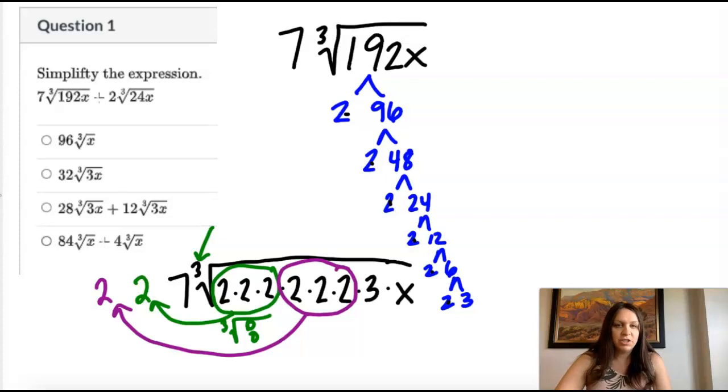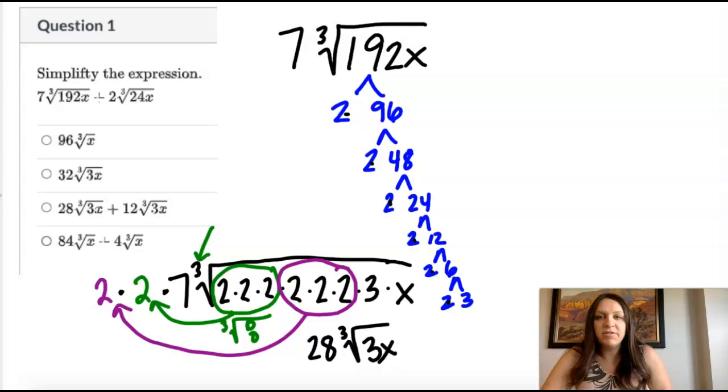And then the three, there's just one. The x, there's just one. And so they stay. These numbers multiply. So two times two is four times seven is 28 cube root of what's left over, which is 3x. So this simplifies to 28 cube root of 3x.